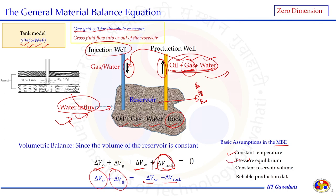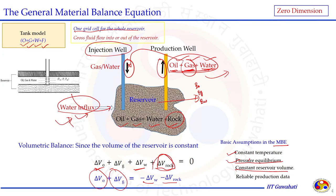Constant reservoir volume means the tank volume does not change. Reliable production data are essential: how much oil, gas, and water are produced to the surface; how much water influx enters the reservoir; and if there is any injection well pumping gas or water into the reservoir. All injection and production data must be very reliable to establish an accurate model and predict the drive mechanisms naturally present in the reservoir.